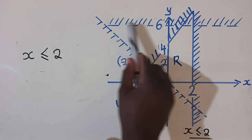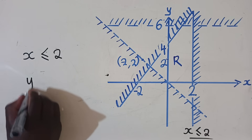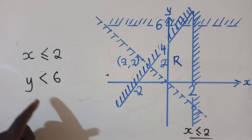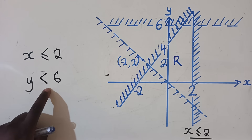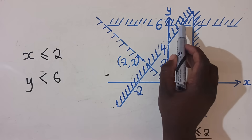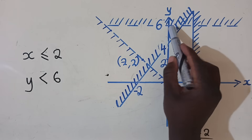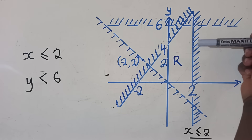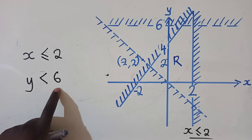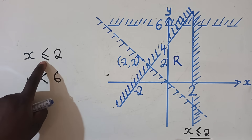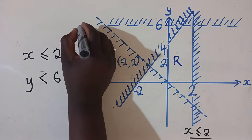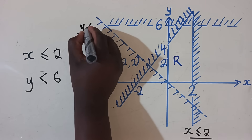The next one is the y-axis line. This is y is less than 6. I'm not putting the equal sign — just y is less than 6 — because it's passing at 6 on the y-axis and the bottom part, which is not shaded, represents less. We don't put equal because the line is dotted.